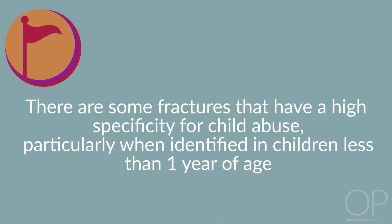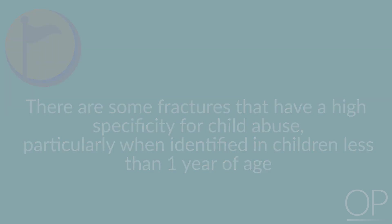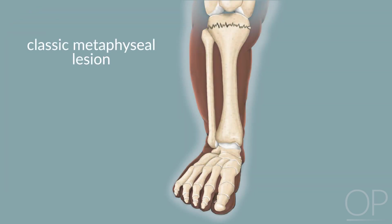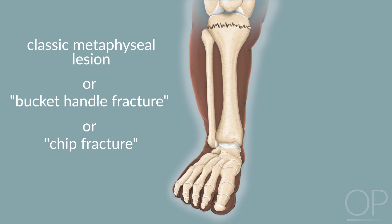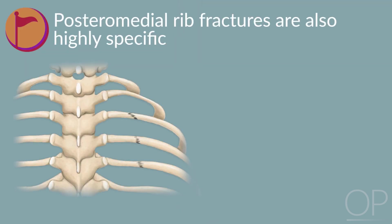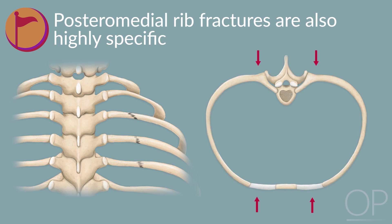There are some fractures that have a high specificity for child abuse, particularly when identified in children less than one year of age. For example, the classic metaphyseal lesion, or CML — also called a bucket handle fracture or chip fracture — is caused by a twisting and pulling force leading to a planar fracture through the metaphysis. Posteromedial rib fractures are also highly specific and can be caused by squeezing an infant such that there is anterior to posterior compression of the chest.